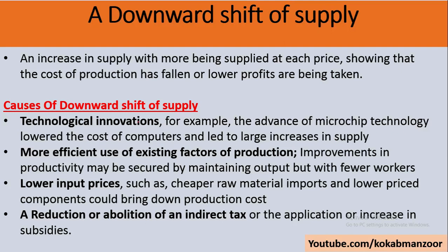Technological innovations can cause supply to increase. For example, advancement in microchip technology lowered the cost of computers, leading to a large increase in supply. A downward shift means the curve shifts towards the right-hand side — supply increases. Similarly, more efficient use of existing factors of production means goods can be produced at a lower cost, leading to more production and lower prices.